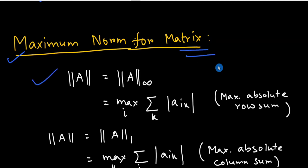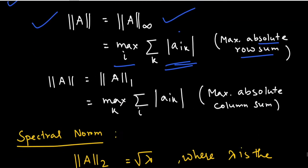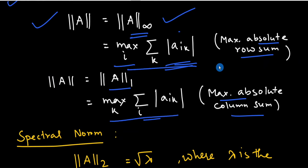The infinity norm of a matrix is defined as: norm∞(A) = max over i of the sum over k of |a_ik|, that is the maximum absolute row sum. Similarly, norm one of a matrix equals the maximum over k of the sum of |a_ik|, that is the maximum absolute column sum.